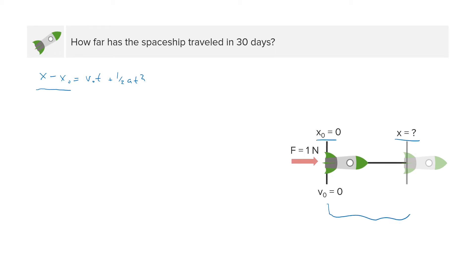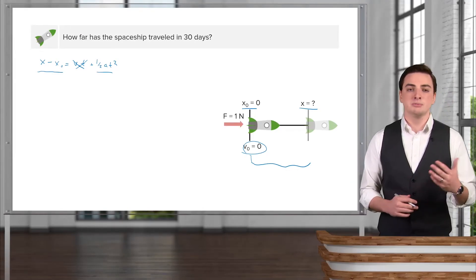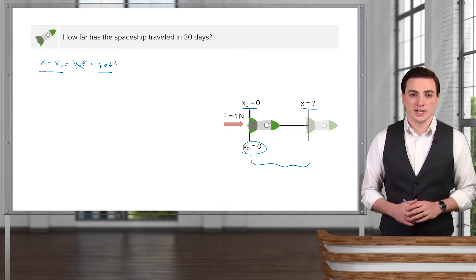which will be exactly this distance here, where you see x and x₀, is equal to the initial velocity times the time, where the initial velocity is zero, so we can get rid of that term, plus one-half the acceleration times the time squared. So we're already almost done with this problem. We need to put in the time, which we know is 30 days, and we also need to put in the acceleration, so we'll have to find that one still.